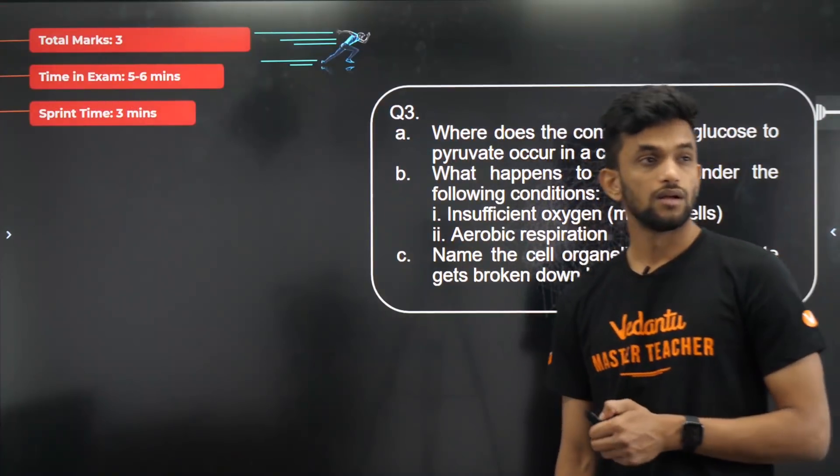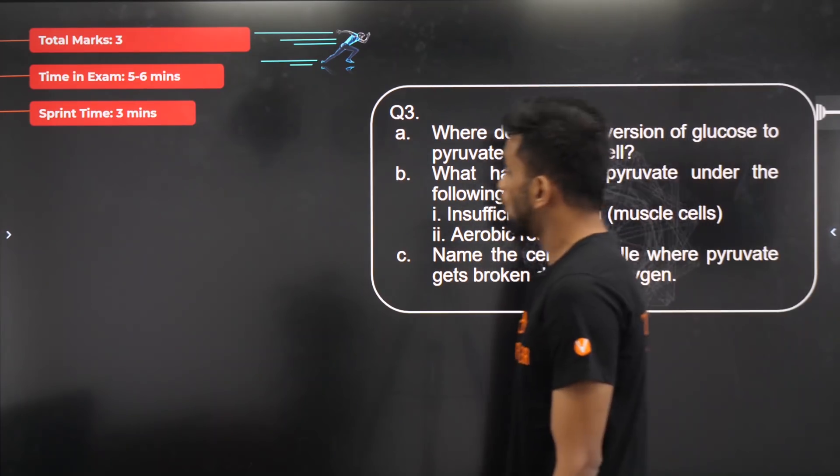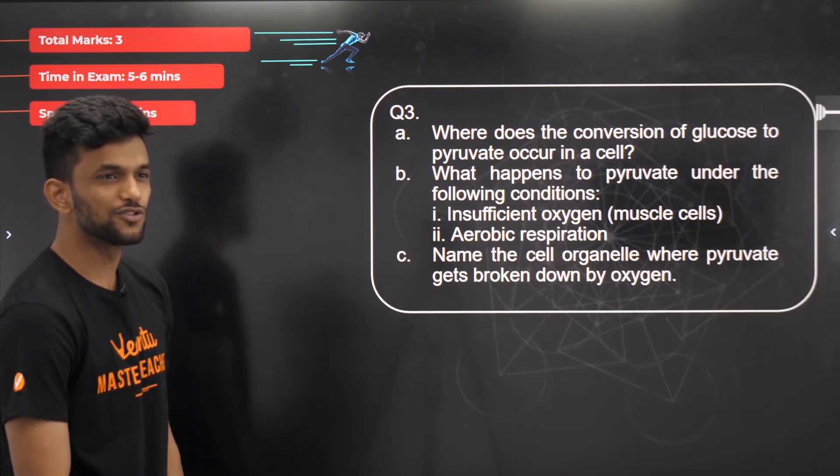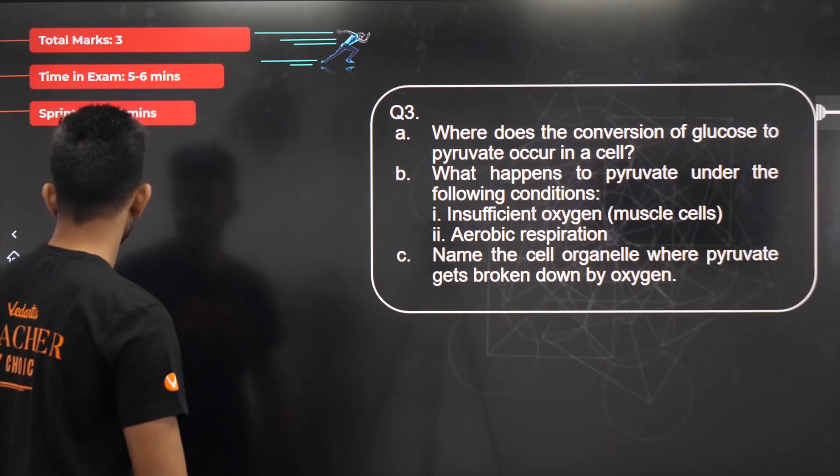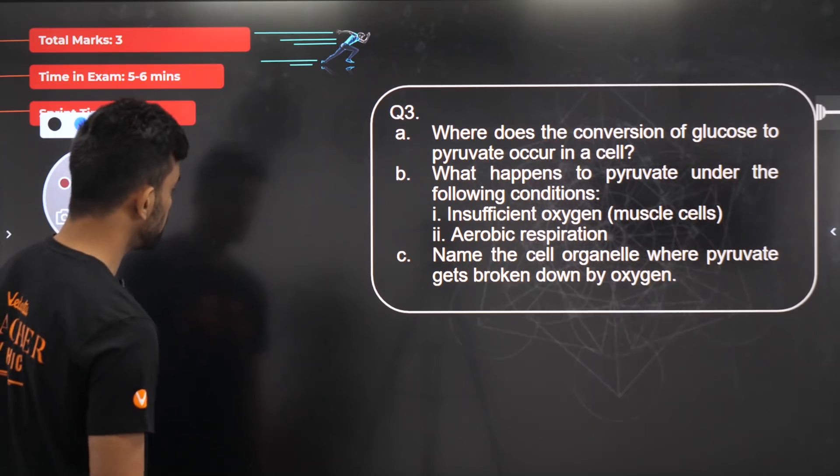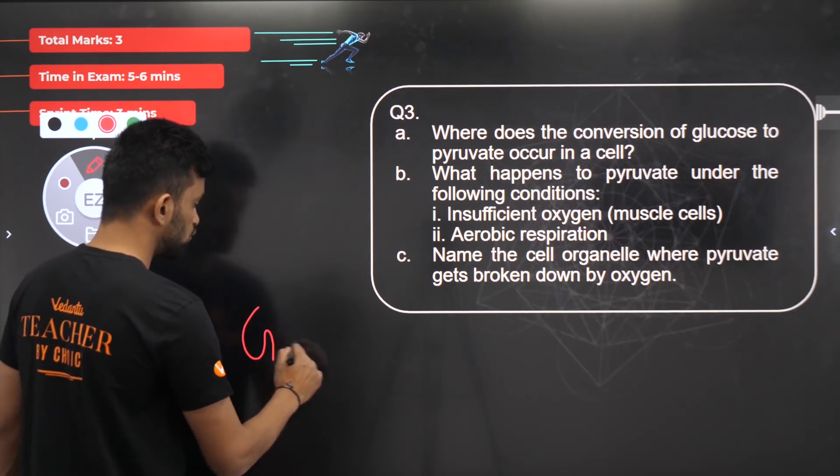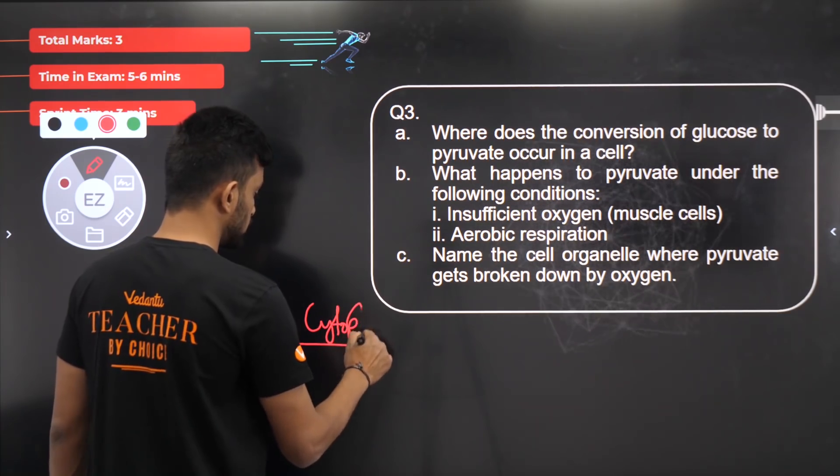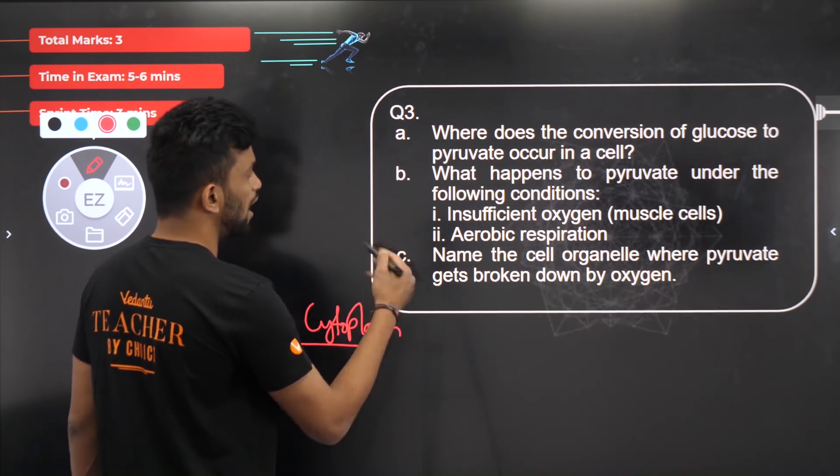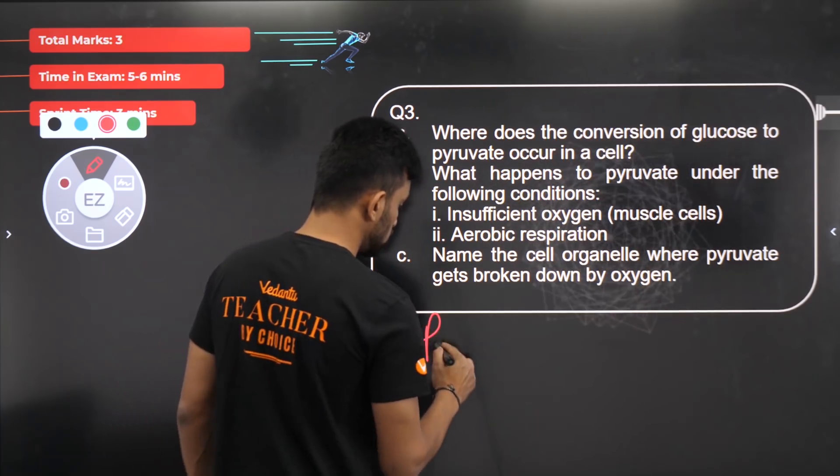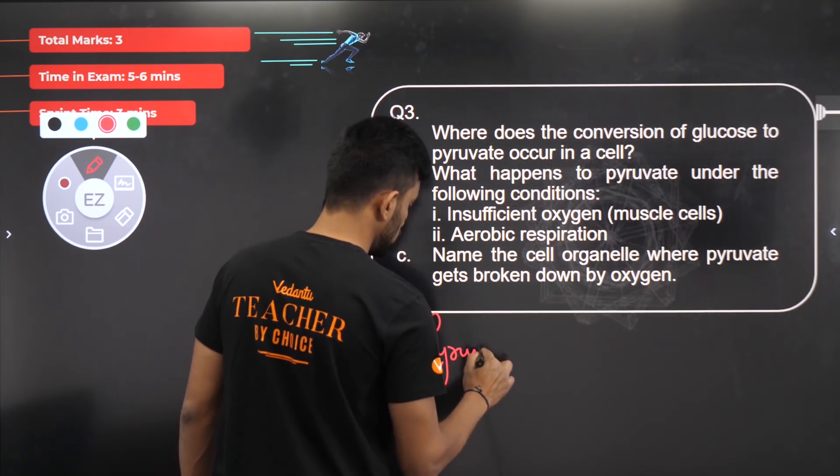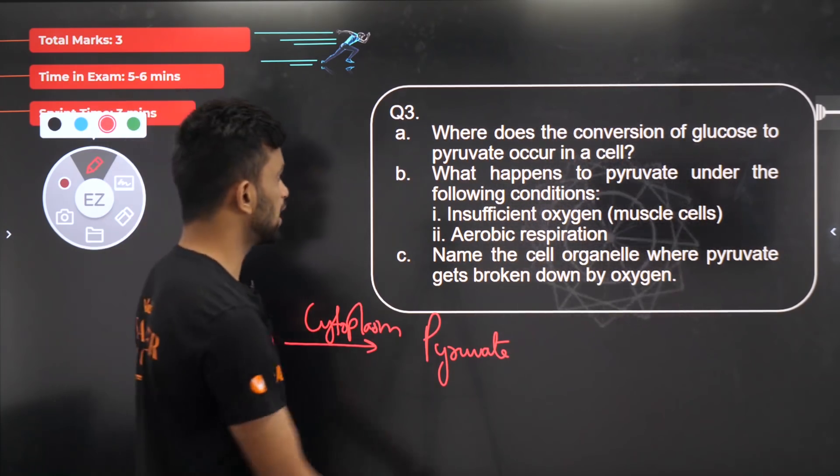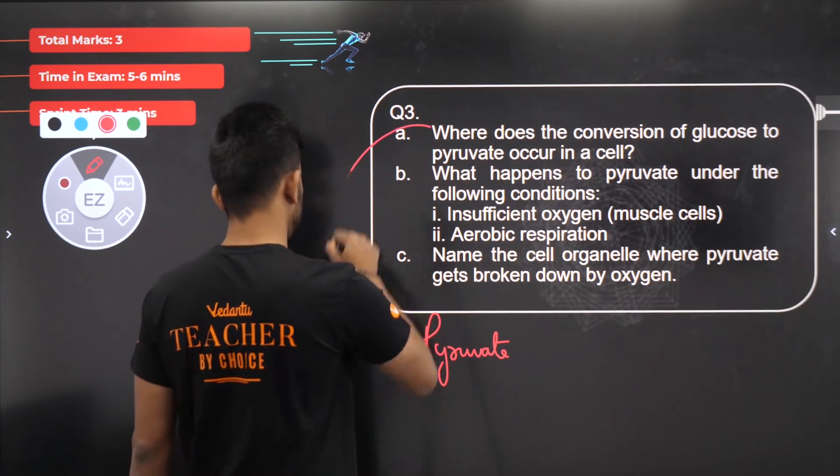Next question: where does the conversion of glucose to pyruvate occur in the cell? Glucose first enters the cytoplasm and there it gets converted into pyruvate. That happens in the cytoplasm.